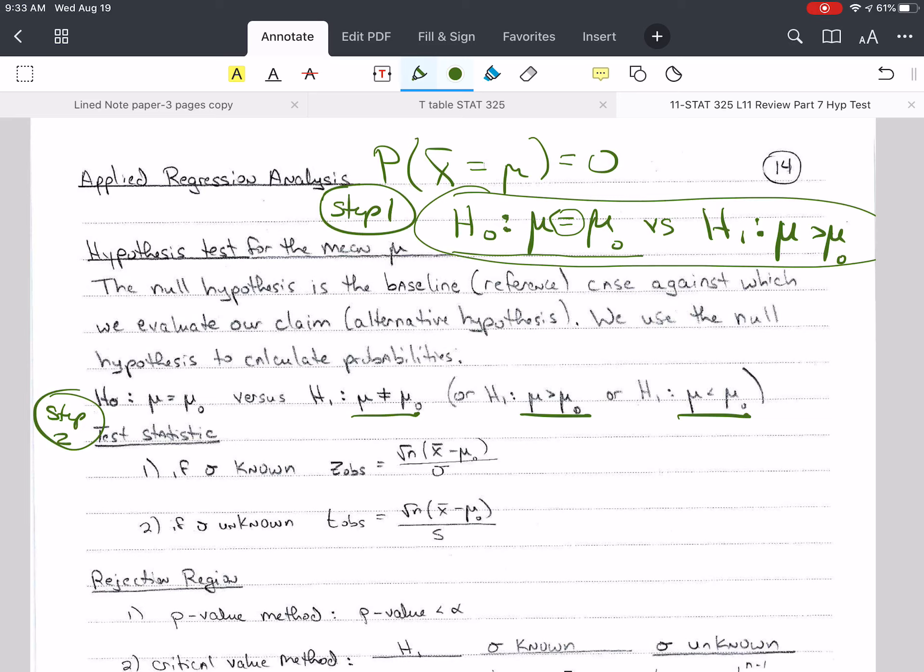So the test statistic. There's two cases. If we know sigma, or if we do not know sigma. If we know sigma, then we're not estimating it, and so the only thing that we're estimating is x bar, and this is our test statistic. And we saw that in the last video.